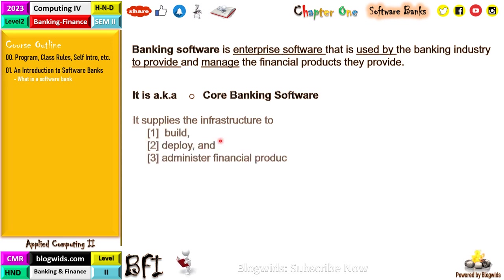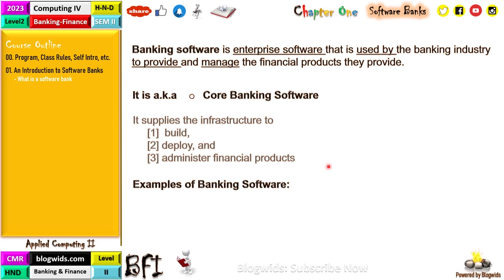These softwares also supply the infrastructure to build, deploy, and administer financial products. Banks actually provide intangible products or services — unlike manufactured goods like cars, you cannot touch a banking service. Examples of banking softwares include Borch Bank, Delta Bank, Barbarossa, Hannibal, and many others.